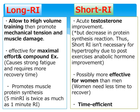One of the reviewed studies compared 4 sets of 75% 1RM to concentric failure of leg extension and leg press with either a 5-minute interval or a 1-minute interval, and reported that the 5-minute interval training group showed approximately twice as much protein synthesis as the 1-minute interval group.